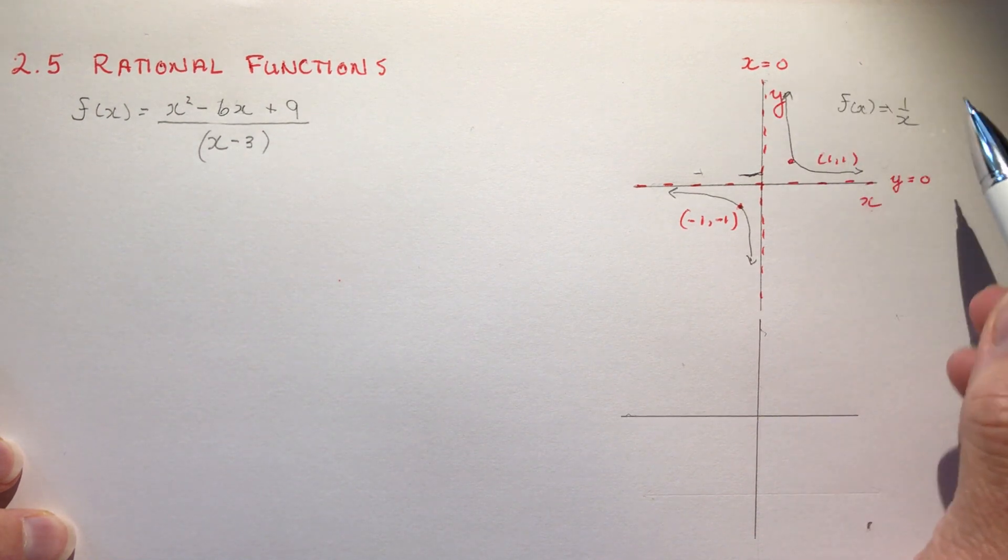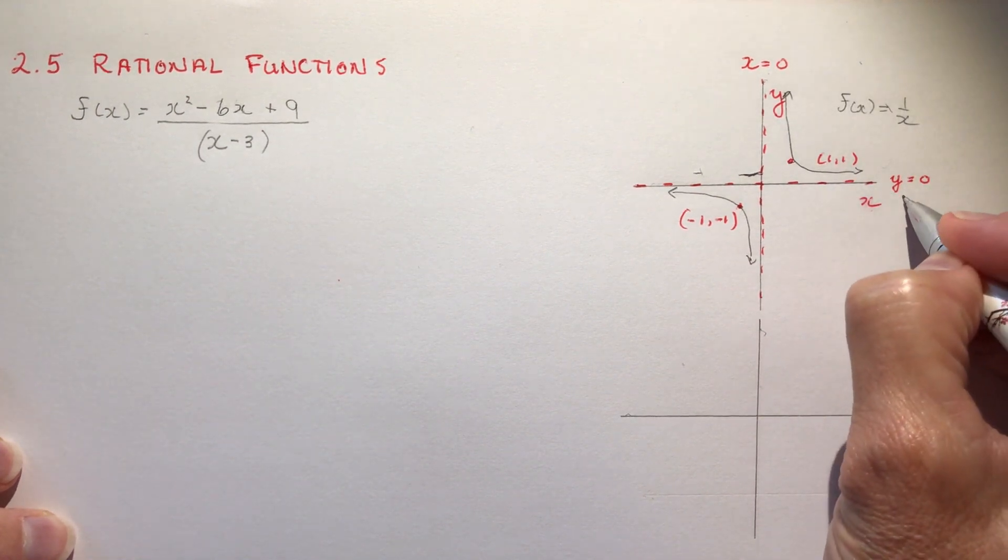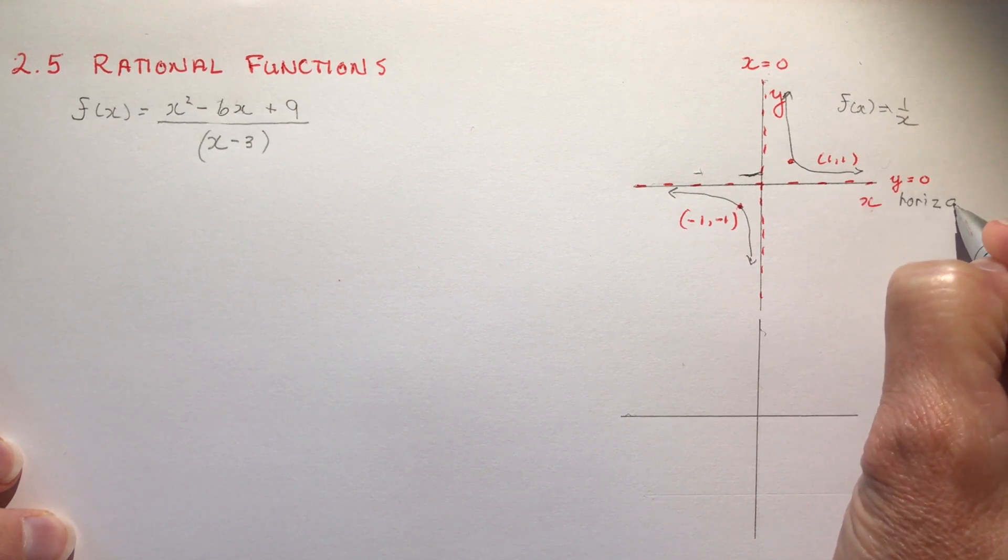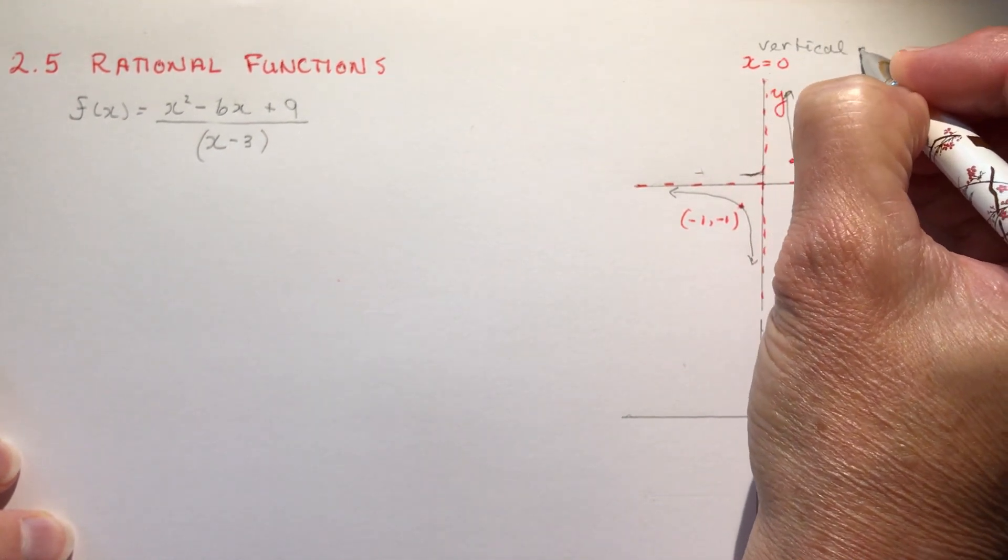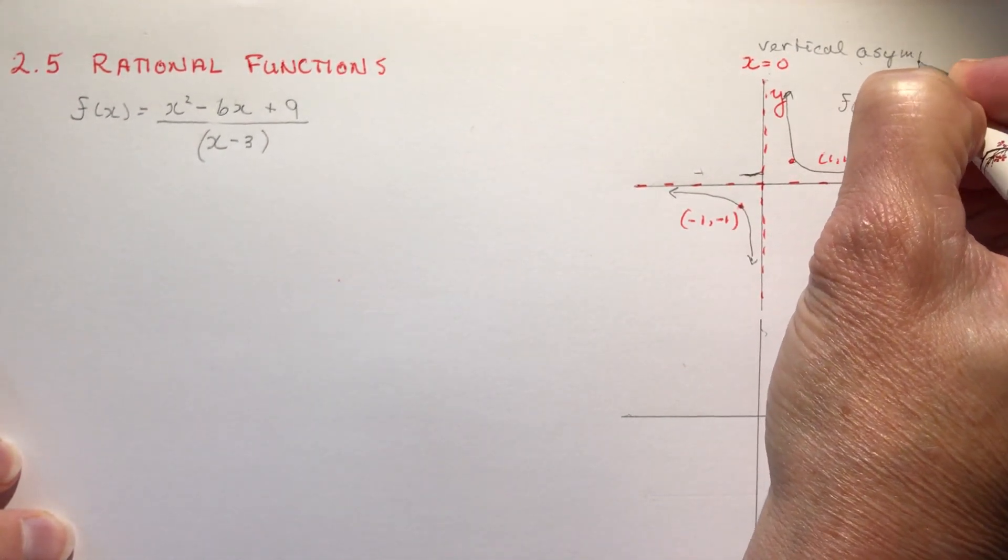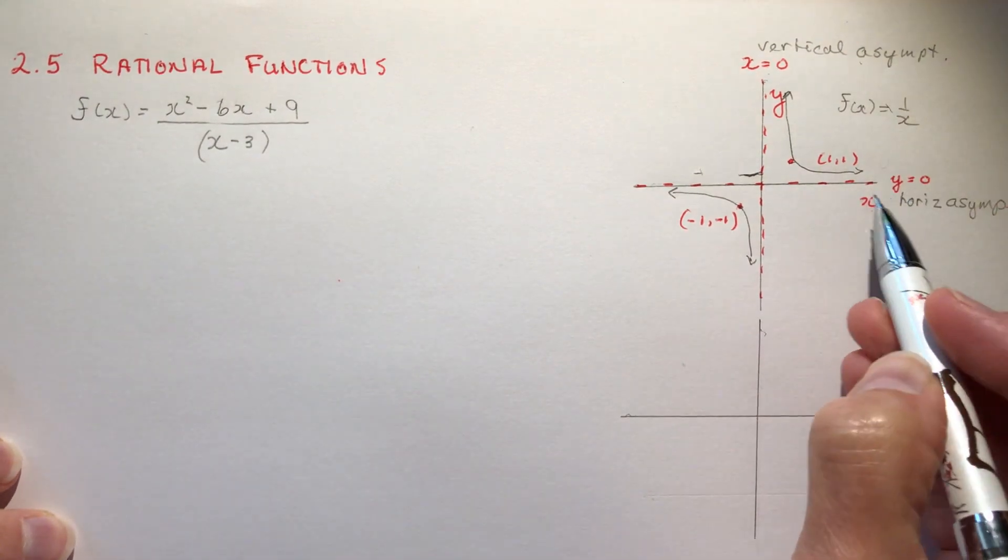This is the vertical asymptote, this is a horizontal. We call it a horizontal asymptote and this is a vertical because it's up and down.